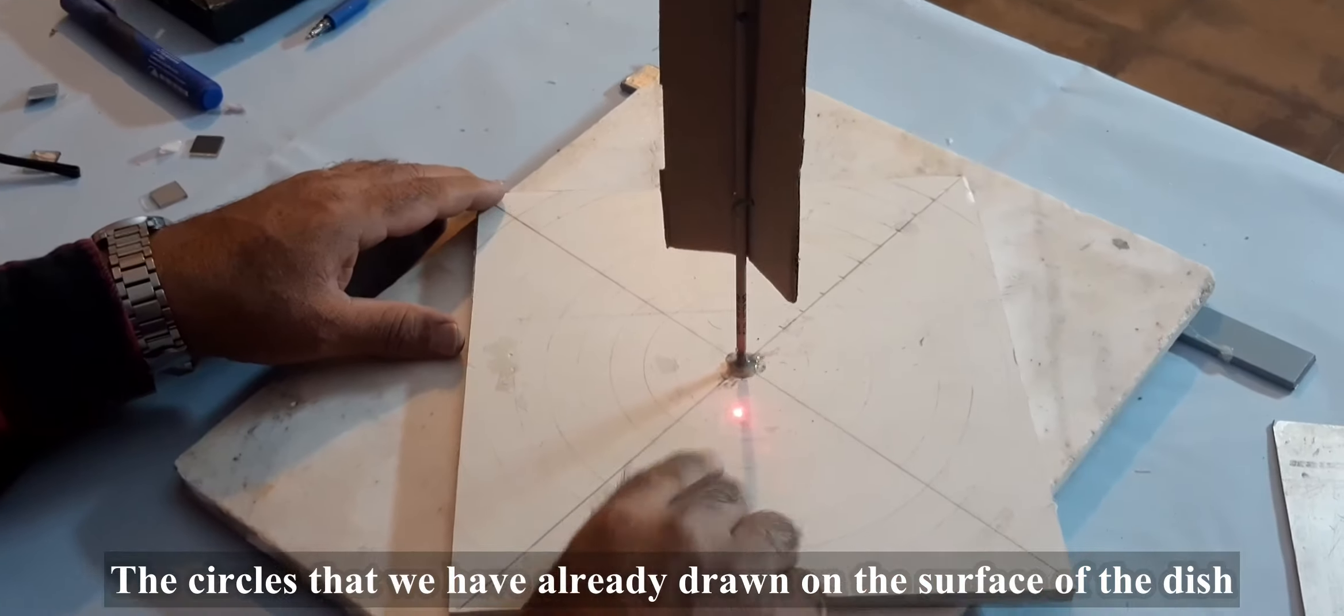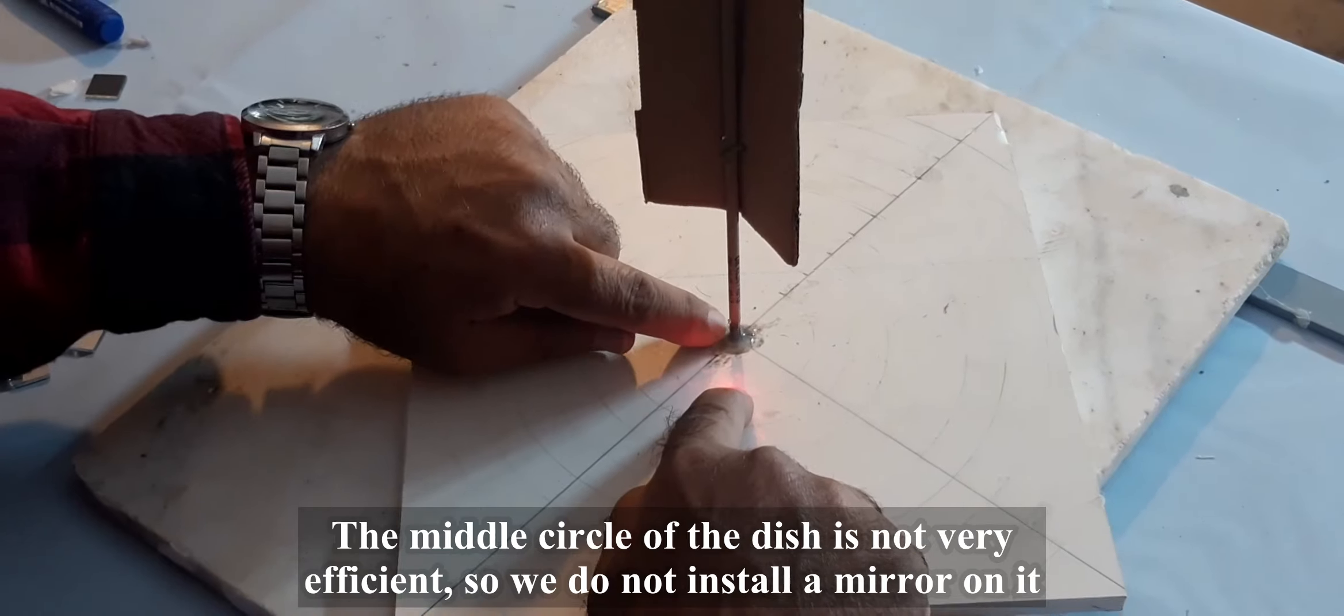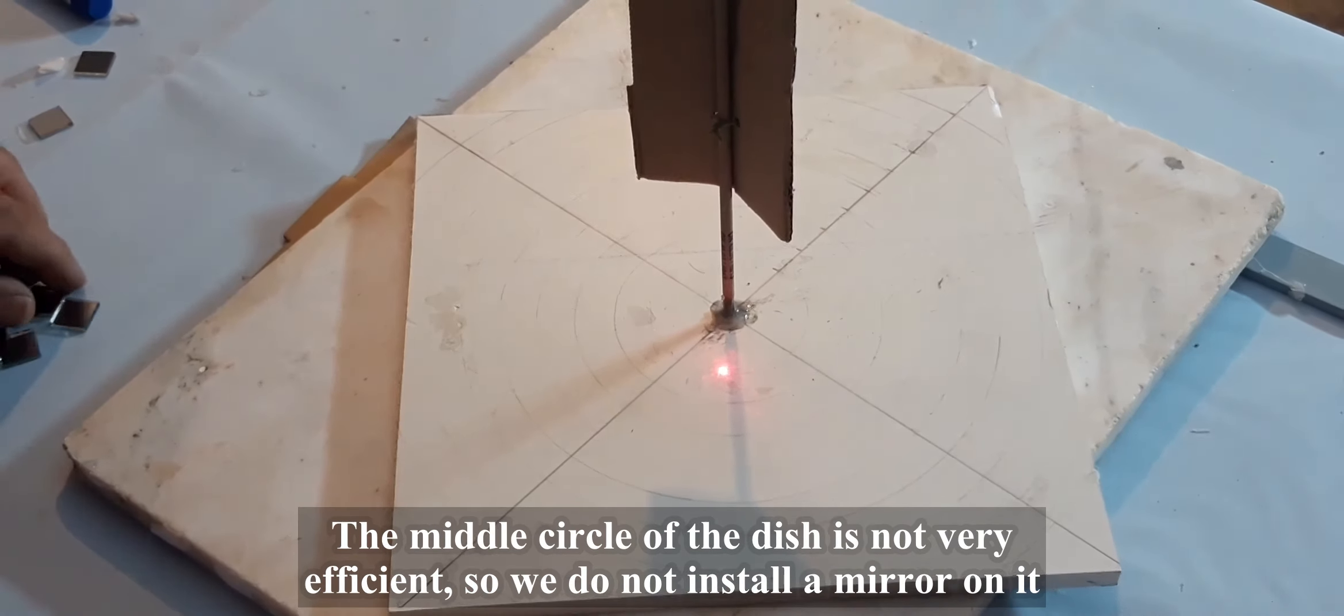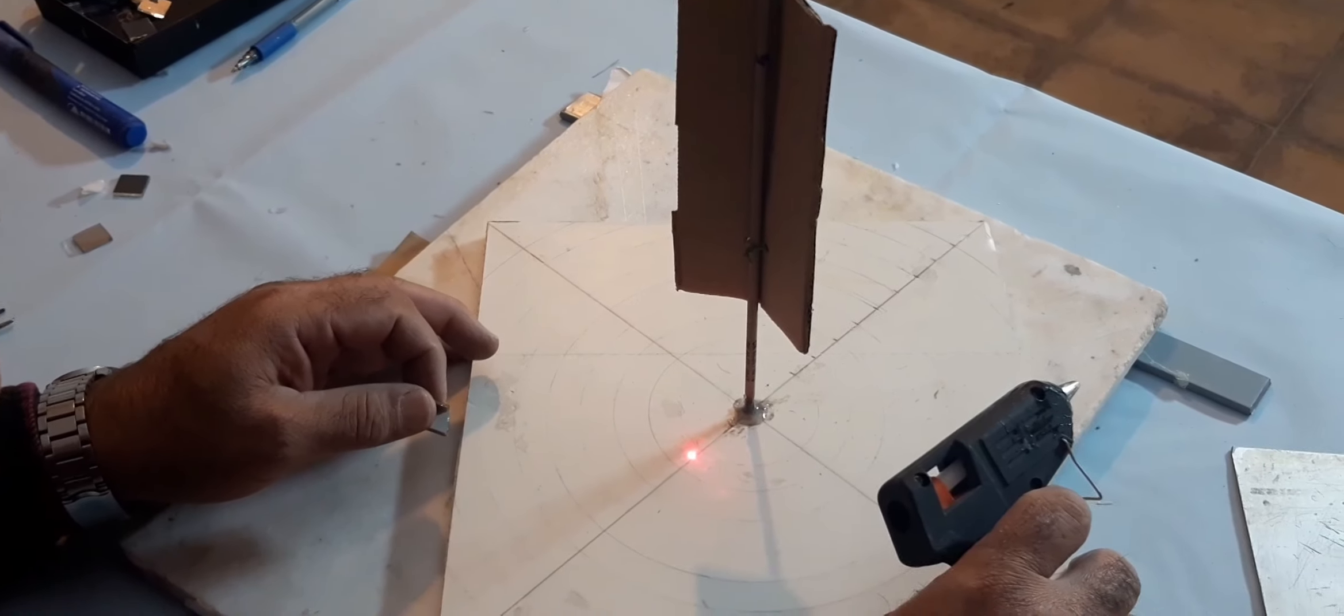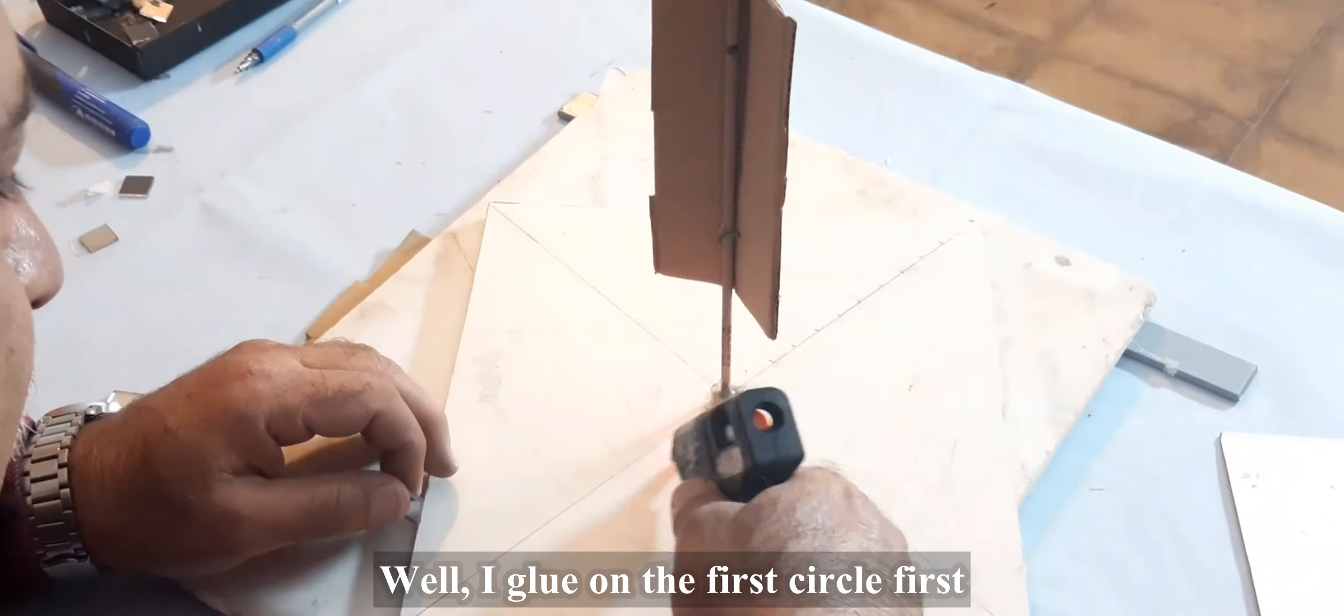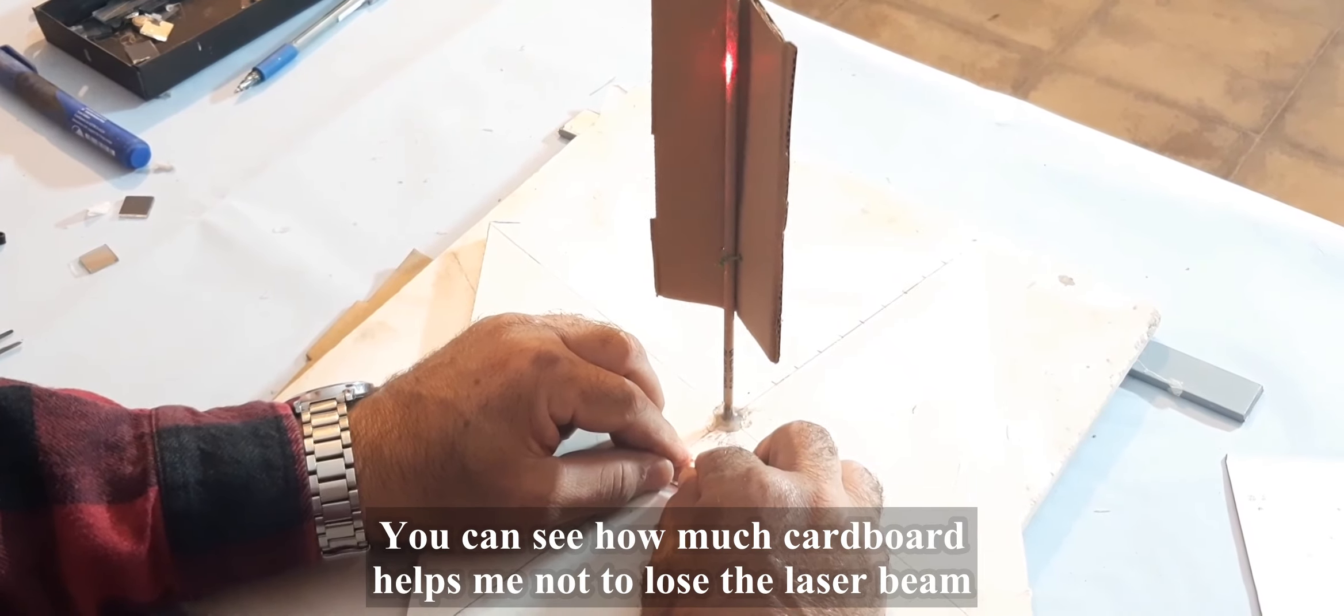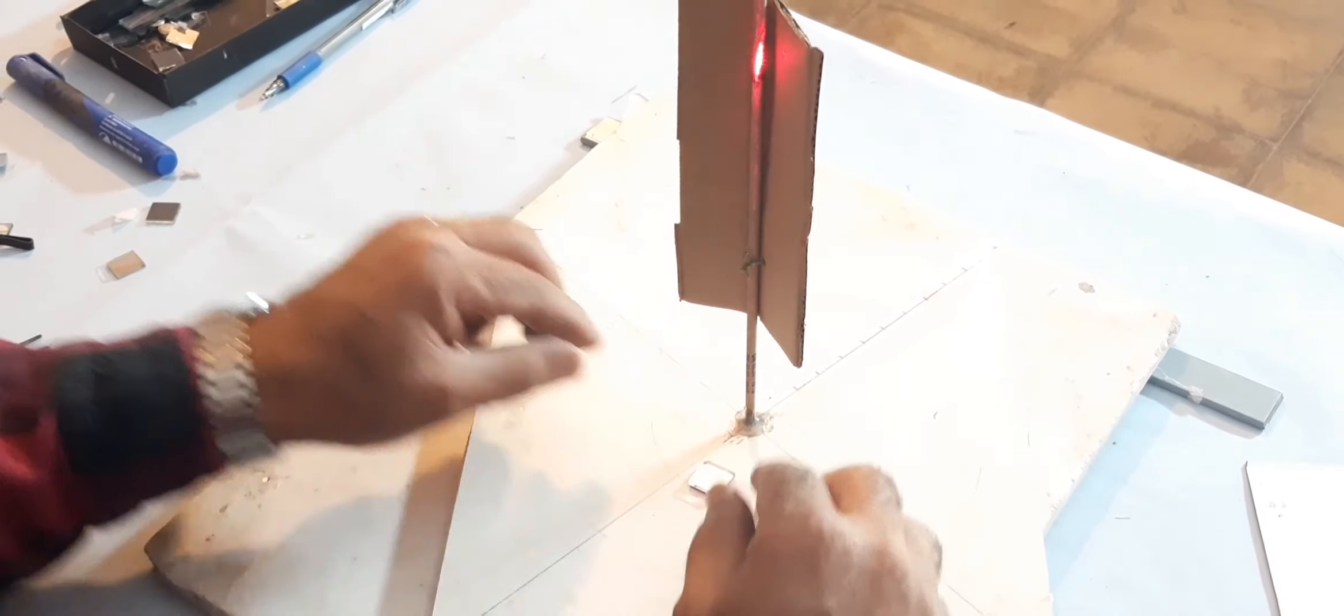Now we want to place the mirror on the dish screen. On the circles that we have already drawn we put the mirrors. According to the drawn circles, the middle circle is not very efficient so we do not install mirror on it. I glue the first circle first. Now I install the first piece of mirror. You can see how much the cardboard helps not lose the laser beam. There is now reflection on the focus.